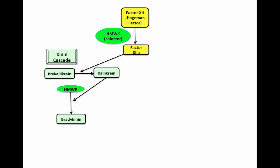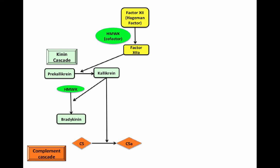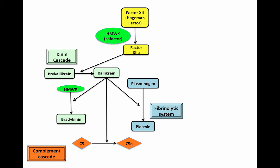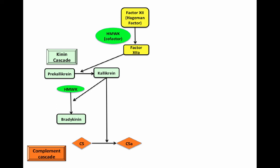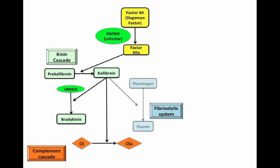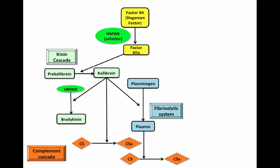Kallikrein can convert high-molecular weight kininogen into bradykinin, a substance that increases vascular permeability and causes pain. Secondly, kallikrein can cleave C5 to generate C5a, a potent pro-inflammatory molecule. Finally, kallikrein can induce conversion of plasminogen to plasmin, which is part of the fibrinolytic system. Plasmin can cleave C3 to generate C3a, another potent pro-inflammatory molecule, and can also degrade fibrin clots.